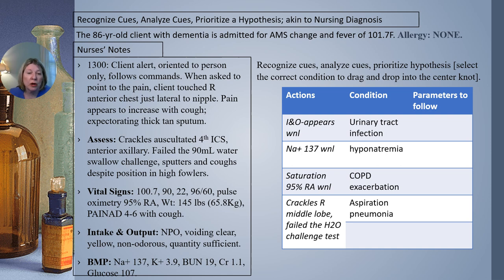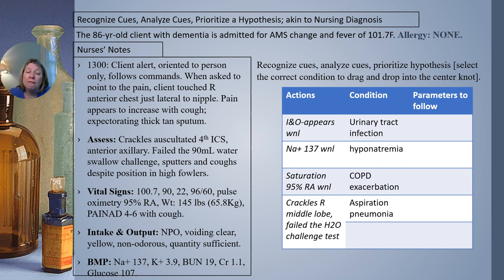Vital signs: temperature 100.7°F, heart rate 90, respiratory rate 22 breaths per minute, blood pressure 96 over 60, pulse oximetry 95% on room air. Weight is 145 pounds. The PAINAD scale was used to assess pain and scored four to six, associated with cough. On intake and output: NPO, voiding clear, yellow, non-odorous, quantity sufficient urine.